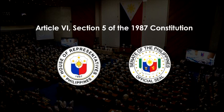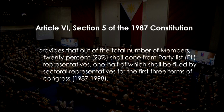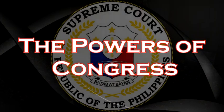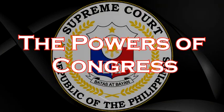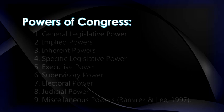Article 5, Section 5 of the 1987 Constitution provides that out of the total number of members, 20% shall come from party-list representatives, one half of which shall be filled by sectoral representatives for the first three terms of Congress from 1987 to 1998. There are nine powers of Congress.